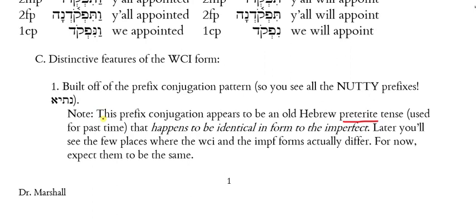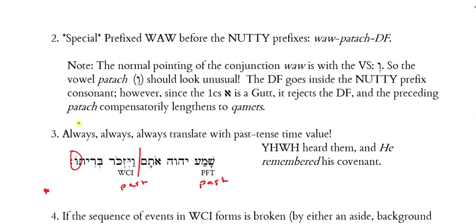From our notes, the distinctive features of the WCI form: first, these past narrative tense forms are all built off of the prefix conjugation, so you will see those 'NYTA' prefixes — nun, tav, yod, and aleph. This preterite tense with the vavs attached happens to be identical to the imperfect, but most grammarians now agree it's not the same tense; they just happen to look the same. The special prefix vav before these NYTA prefixes is a vav-patah followed by a dagesh forte in the prefix consonant.